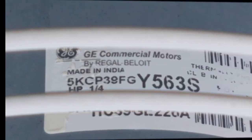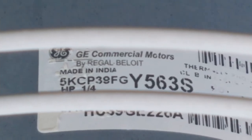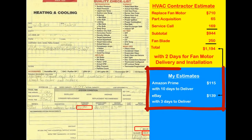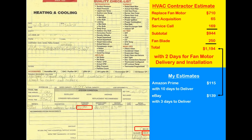I took a magnified picture of the fan motor data plate through the shroud cover on top of the air conditioner unit and got estimates from Amazon Prime and eBay. With the temperature at 95 degrees and humidity at 70 percent, my wife and I went with eBay. $1,194 versus $139 with similar delivery and repair dates was a no-brainer for us.